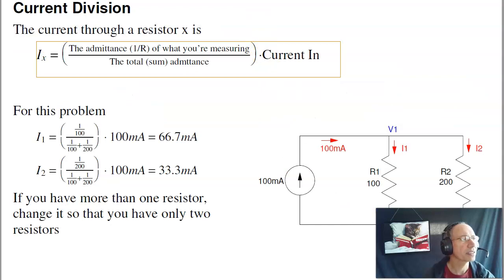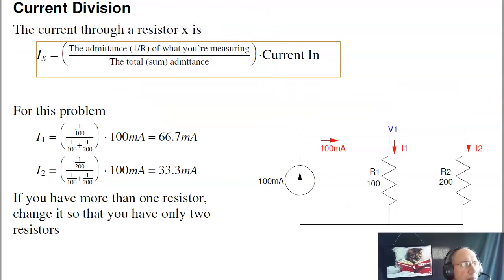As an example, if I make this 100 ohms, 200 ohms, 100 milliamps coming in, then the current I1 will be 1 over 100, divided by the total admittance, times the current coming in, 66 milliamps. I2 will be 1 over 200, divided by the total admittance, 33 milliamps. And note that I1 plus I2 is the total 100. Also note, the current prefers going through the lower resistance. The branch with the lowest resistance gets the most of the current. If this became 0 ohms, then all the current goes through R1.